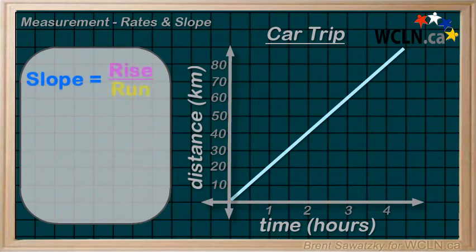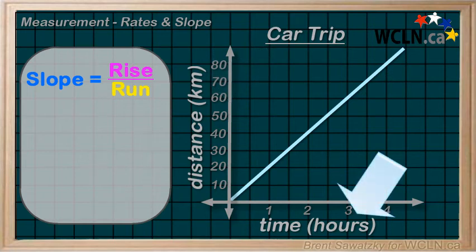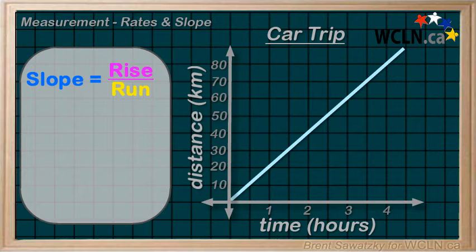Recalling that slope equals rise over run, and that real graphs typically have units involved—units on the y-axis and typically different units on the x-axis—the slope, rise over run, is a rate.